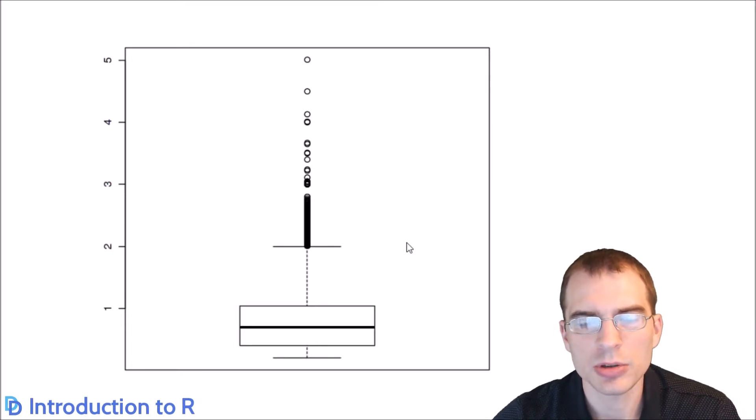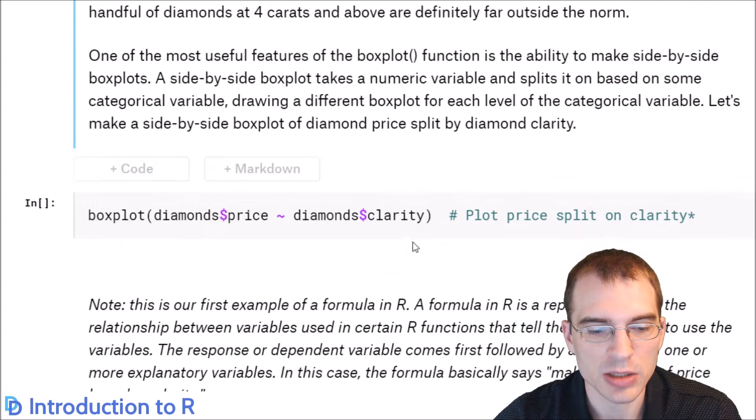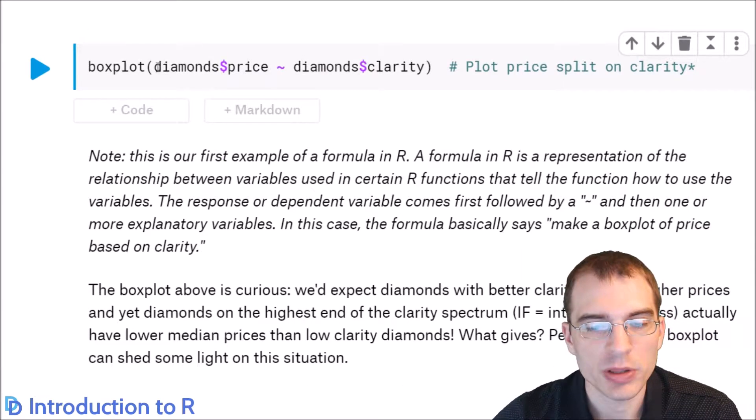Box plots in base R also allow you to split on a given variable and create multiple box plots for each of the splits. So we'll show how to do that next. Use the box plot function again. You put the dependent or response variable first. In this case, we're interested in price and how clarity influences price. So we're putting price first. Then you use this little tilde here. And second, you put the explanatory variable or the variable that you're splitting on second. So we're going to put clarity there, which is essentially the quality level of the internal of the diamond. So we'll run this and see how price varies with clarity.